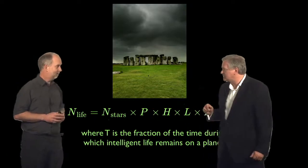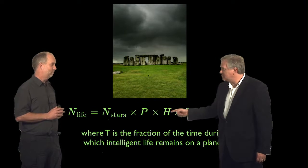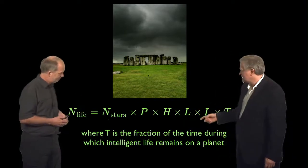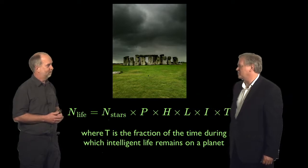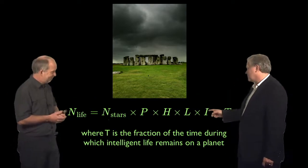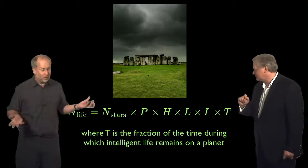Times the fraction of planets, which we kind of know, times the number of those planets which are habitable, which we can at least guess, times the likelihood of life developing on one of those planets, which we have no idea about, times the likelihood of that life becoming intelligent, which we also have no idea about.